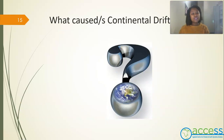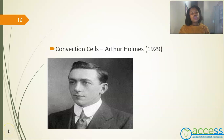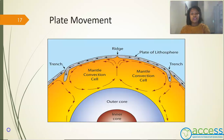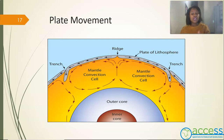Now that we know about plate tectonics and how it began, we need to understand what caused continental drift. This is where Arthur Holmes comes in. Arthur Holmes was a British geologist who argued that huge convection cells existed within the earth, and that this accounted for the continental drift. Plate movement is the phenomenon that caused continents to move, and it is driven by convection cells — where warm material rises and cool material descends or sinks.